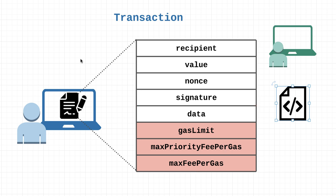Next we have the nonce. A nonce is a unique number required for every single transaction. For EOAs, this number is the count of transactions sent from the account. For contract accounts, it's the number of contracts created by the account. The reason for this value is that a different nonce is needed for every transaction to prevent the network from processing the same transaction over and over again — essentially preventing replay attacks to get more fees. The signature field is the digital signature generated from the private key, which allows the account owner to authorize the transaction.